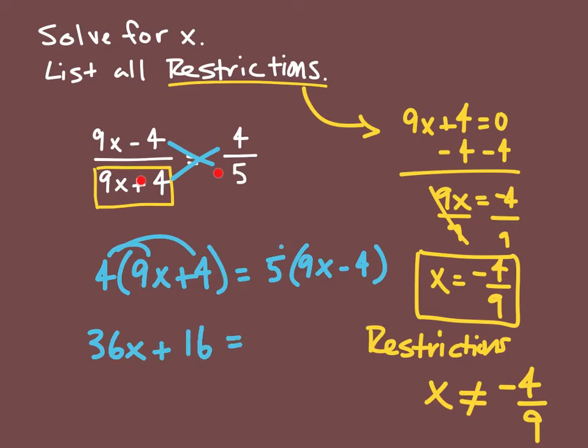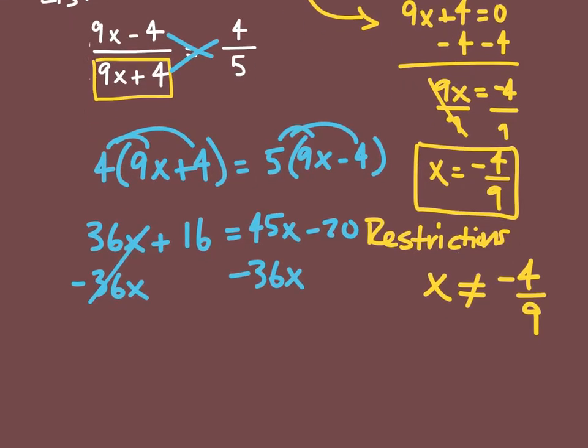If I distribute my five here, I'm going to get five times nine x, which is going to give me 45x and then five times negative four is minus 20. To solve this for x, I'm going to subtract 36x from both sides, and we're going to get 16 is equal to 9x minus 20.